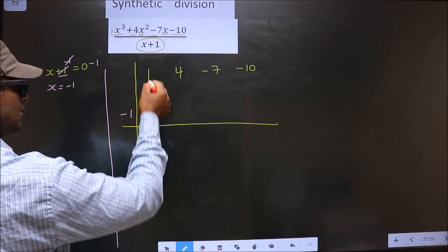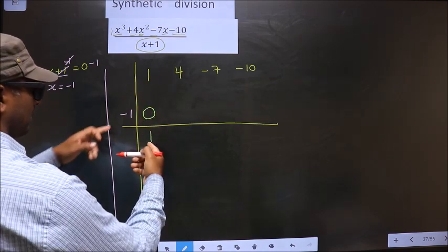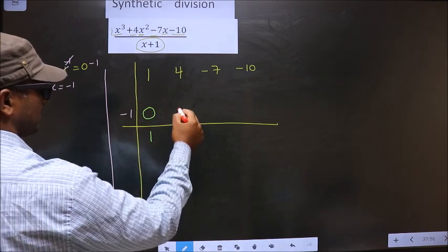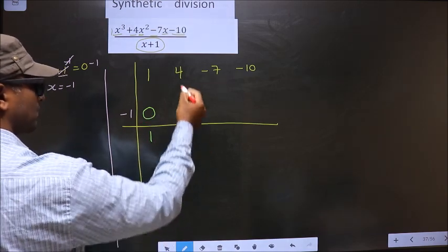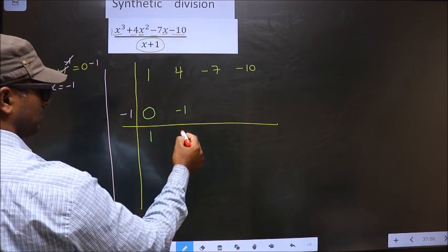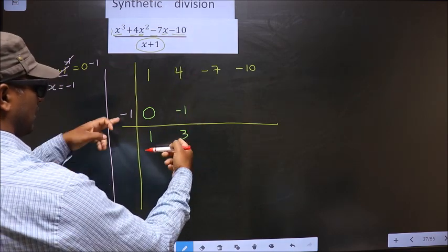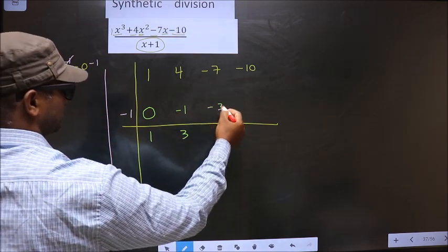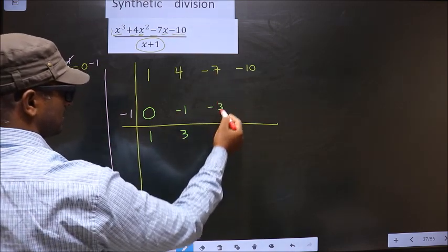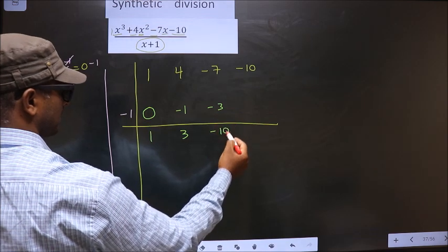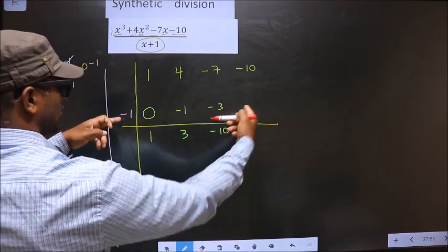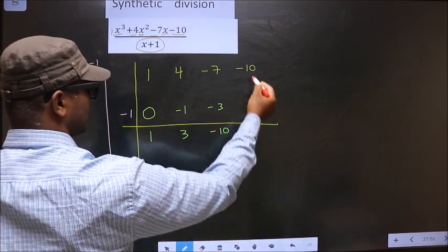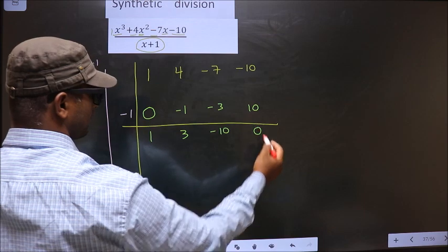Now add these 2. 1 plus 0 is 1. Now you should multiply these 2 and write here. So minus 1 into 1 is minus 1. Now add these 2, you get 3. Now multiply these 2 and write here. Minus 1 into 3 is minus 3. Now add these 2, you get minus 10. Now multiply these 2 and write here. So multiply you get 10. Now add these 2, you get 0.